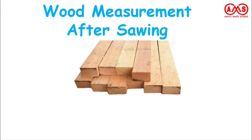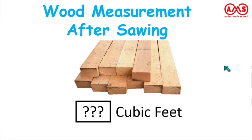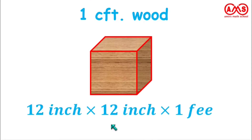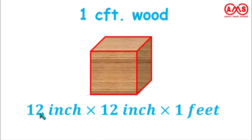That is the wood measurement after sizing in cubic feet, that is CFT. One CFT of wood is 12 inches by 12 inches by 1 foot. We know 1 foot equals 12 inches, so we can say 12 inch length, 12 inch breadth, and 12 inch height. The measurement of 1 by 1 by 1 foot is 1 cubic foot. That is, 12 inch by 12 inch by 12 inch equals 1 CFT.